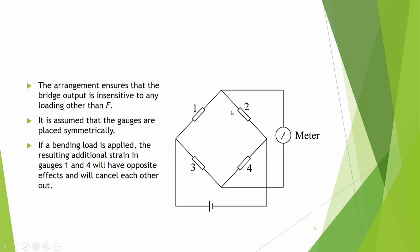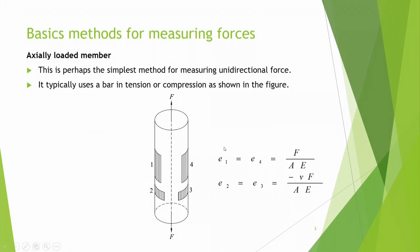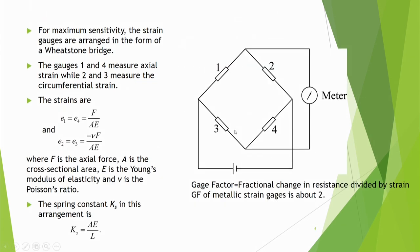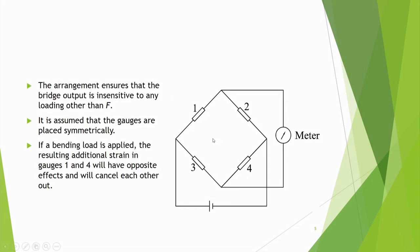This arrangement ensures that the bridge output is insensitive to any loading other than F. If a bending load is applied, the resulting additional strain in gauges 1 and 4 will have opposite effects and will cancel each other, because gauge 1 is on one side of the axis and gauge 4 is on the other. One will be in tension and the other in compression, so these effects nullify each other.